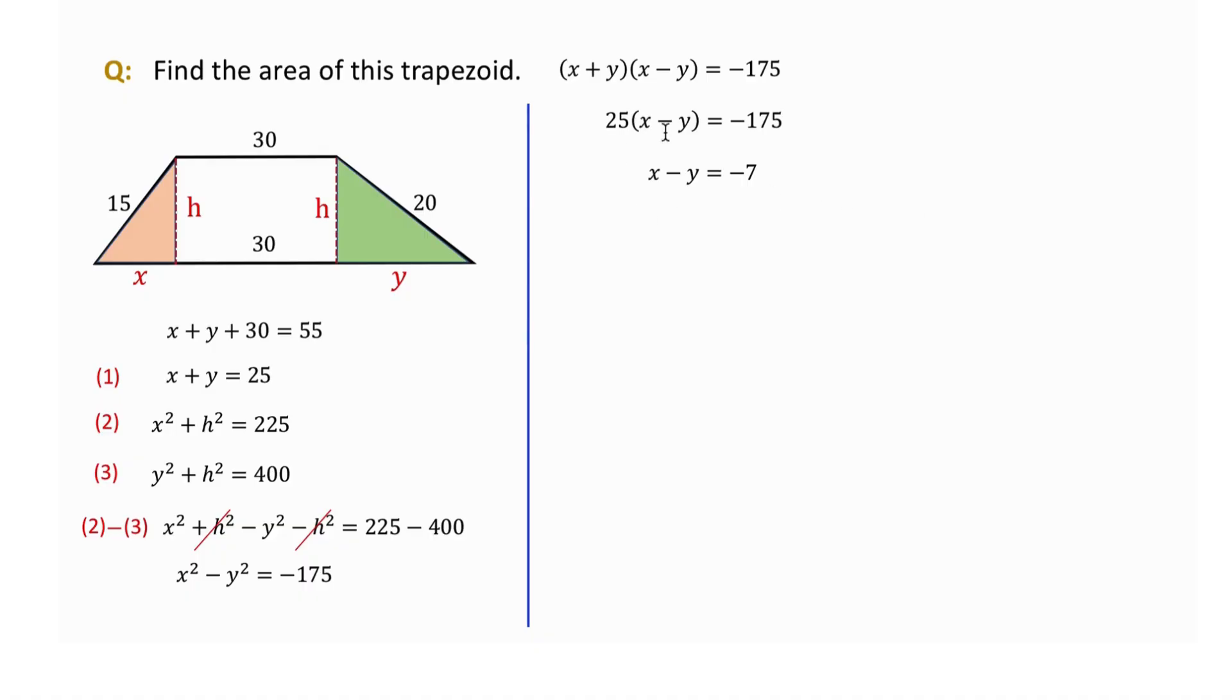Now we have two equations: x minus y equals negative 7 and x plus y equals 25. We can add them to get x equals 9. Plugging this into equation 1 and subtracting 9 from both sides, we find y equals 16.